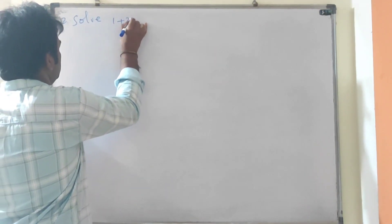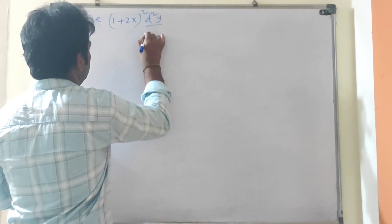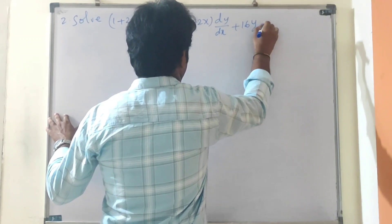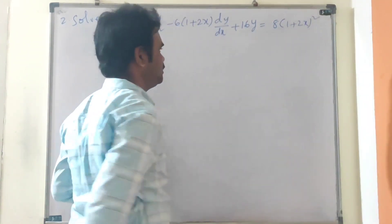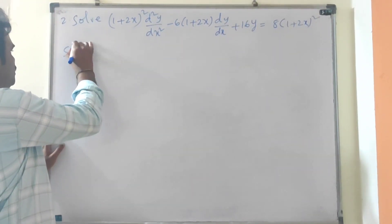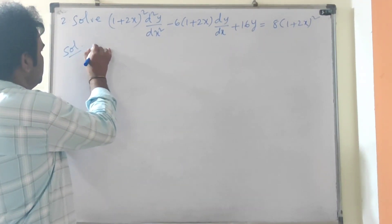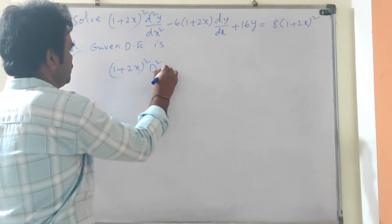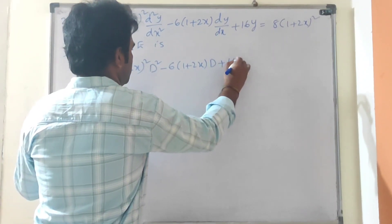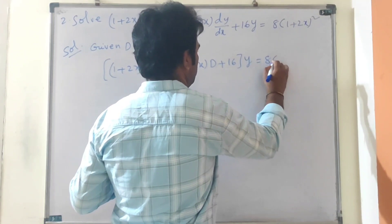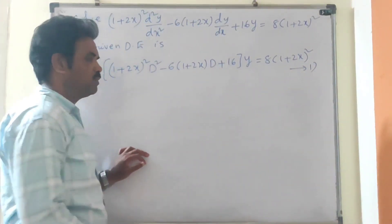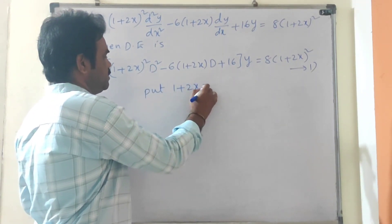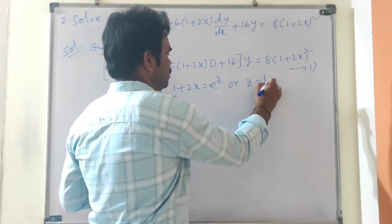Next problem: Solve (1 + 2x)² · d²y/dx² - 6(1 + 2x) · dy/dx + 16y = 8(1 + 2x)². Write the given differential equation in operator form: (1 + 2x)² · D² - 6(1 + 2x) · D + 16, applied to y, equals 8(1 + 2x)². Let this be equation 1. The substitution is (1 + 2x) = e^z, or z = log(1 + 2x).